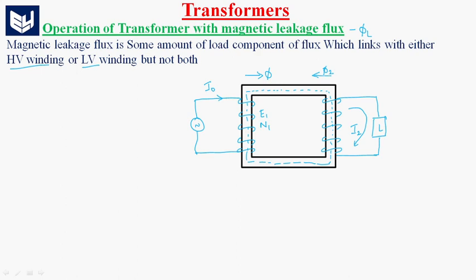To satisfy this phi2 flux, the primary winding takes some additional amount of current, that is I1 dash, which results in production of phi1 dash. From this, we can say that the flux phi1 dash is greater than phi. So, the leakage flux is due to phi1 dash.